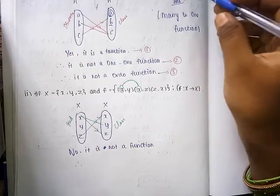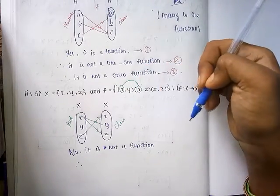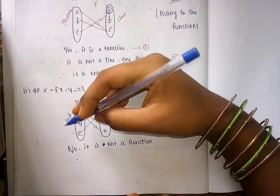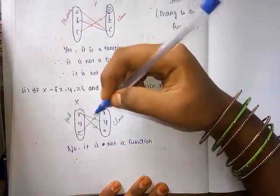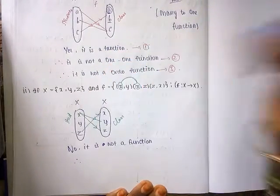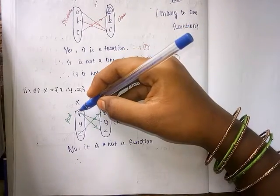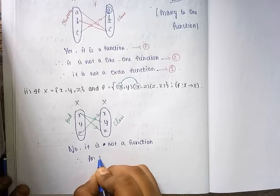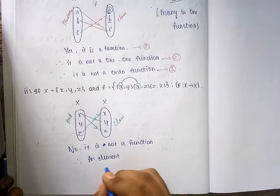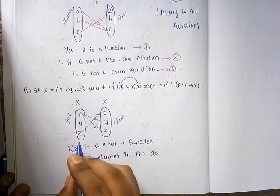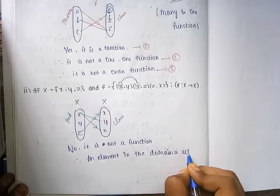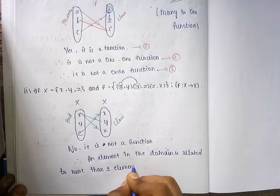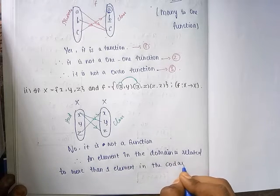It is not a function. Let us explain why. An element in the domain is related to more than one element in the co-domain. This is the domain and this is the co-domain. In the domain, element x has a map to more than one element in the co-domain. That is why it is not a function.